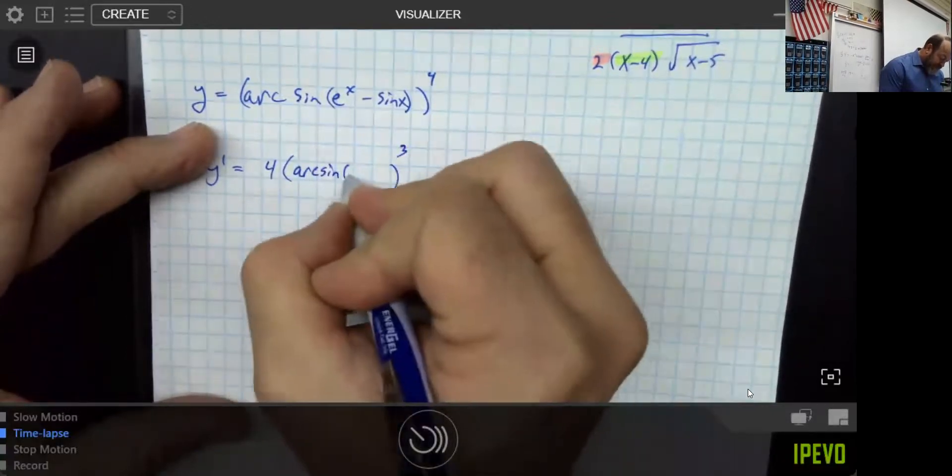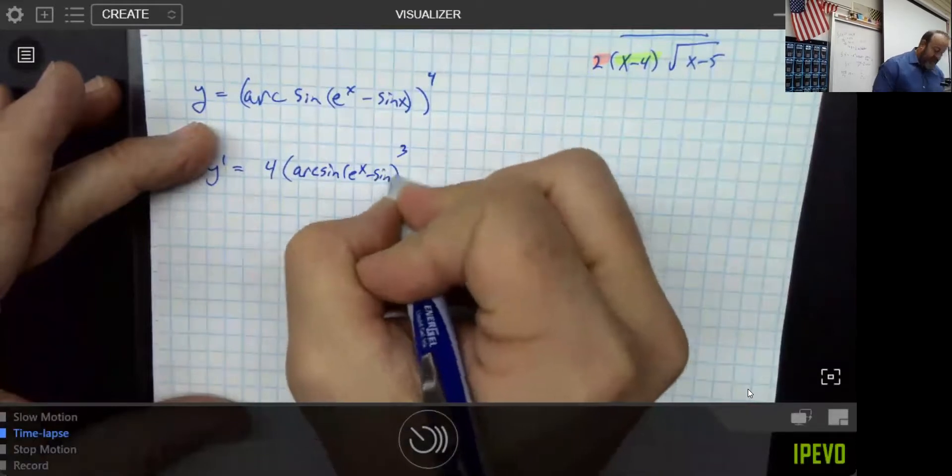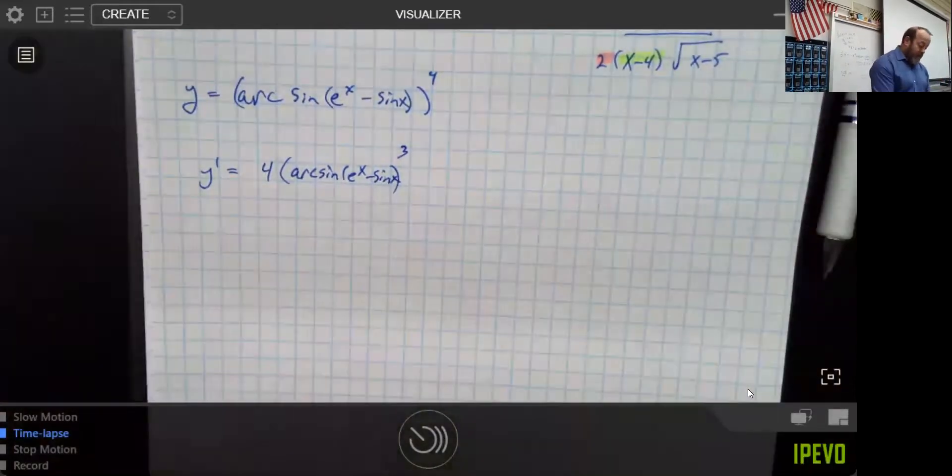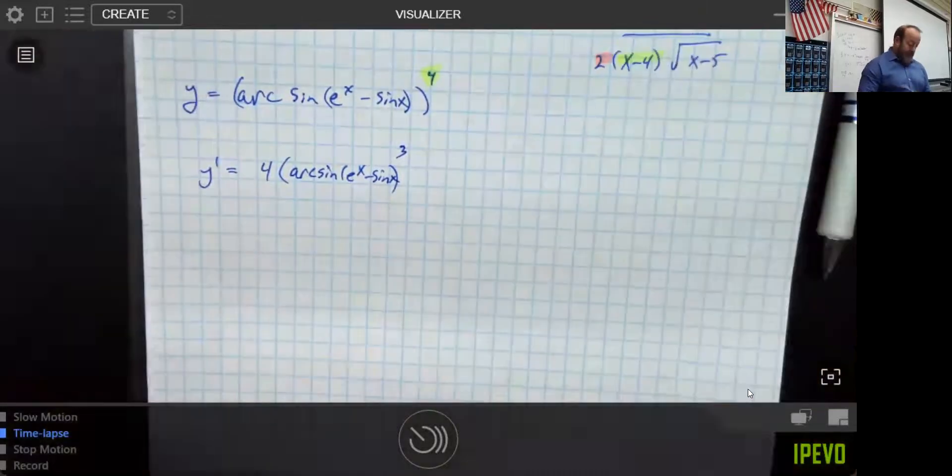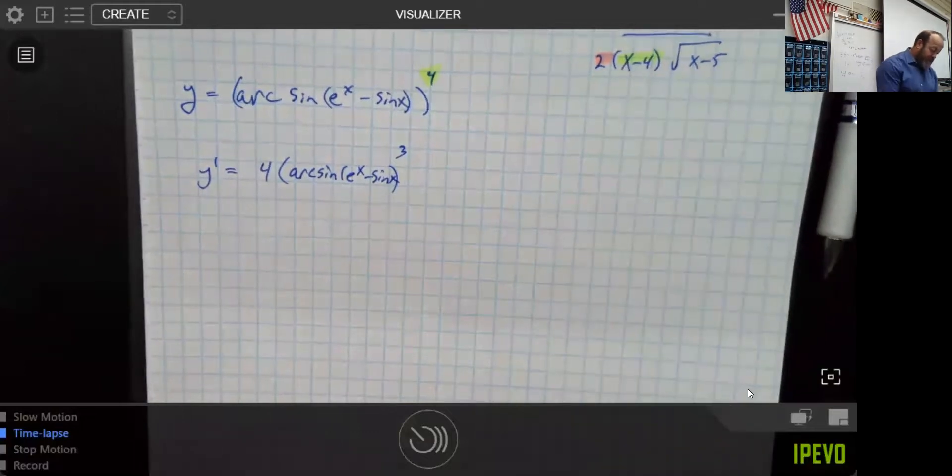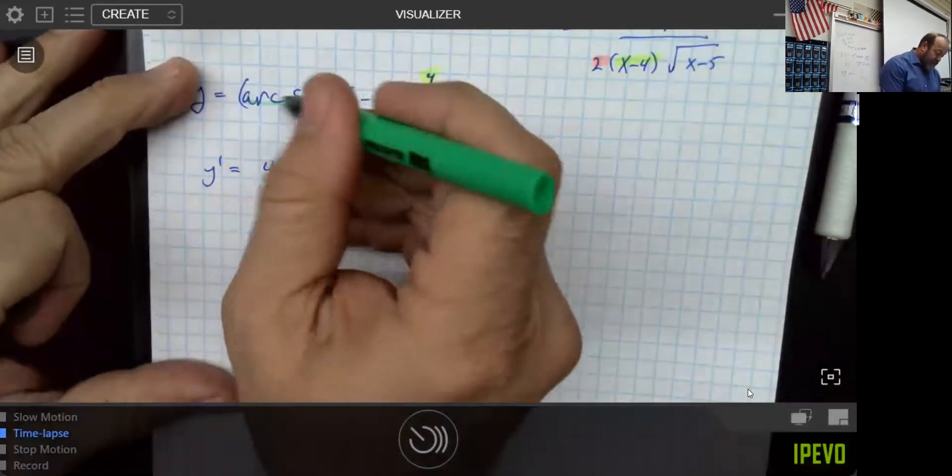This is chain rule. Keep in mind, we just took care of the part that is the four. Now, we need to go in here, and we need to take the part that is the arc sine.